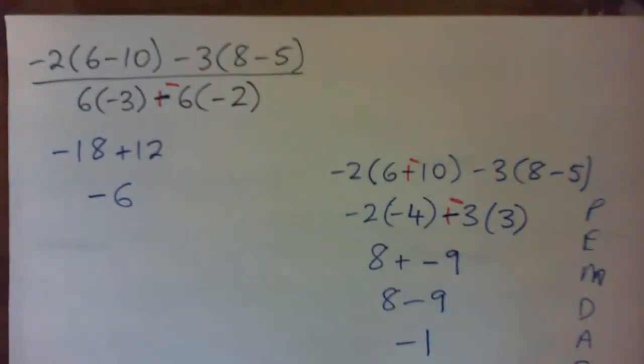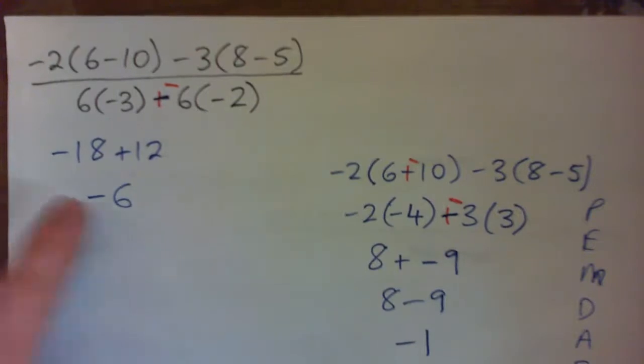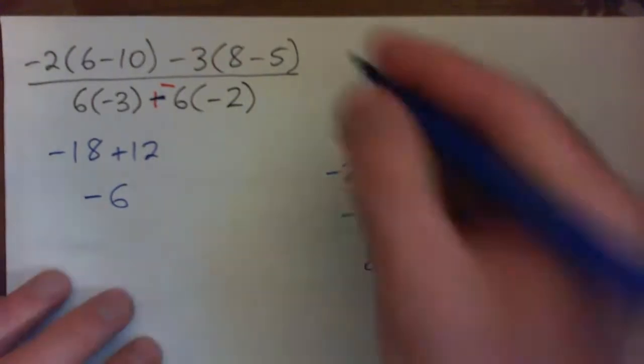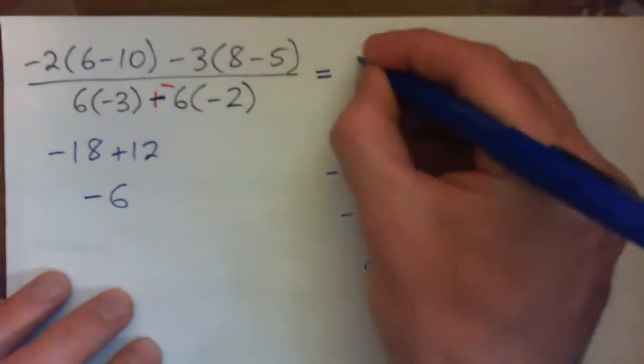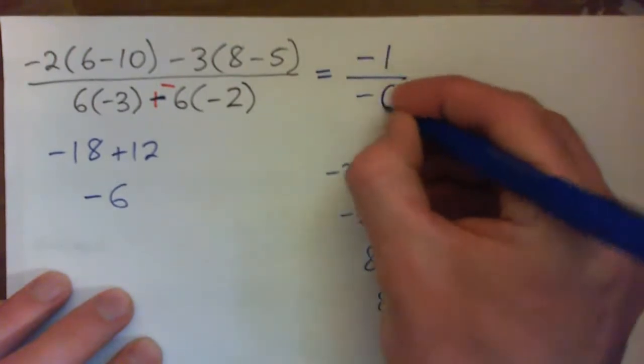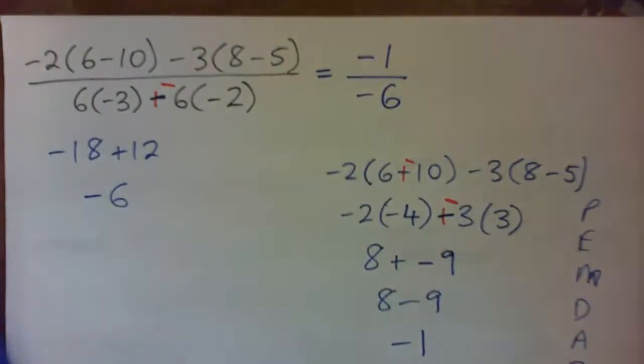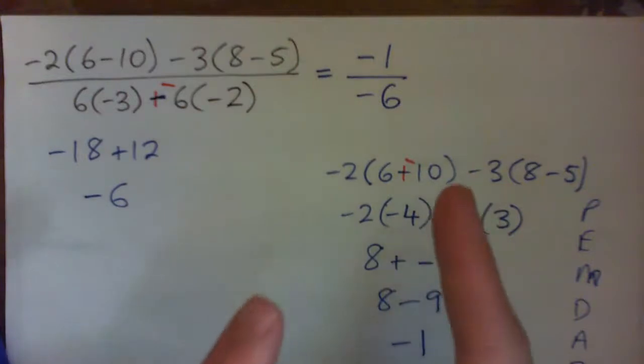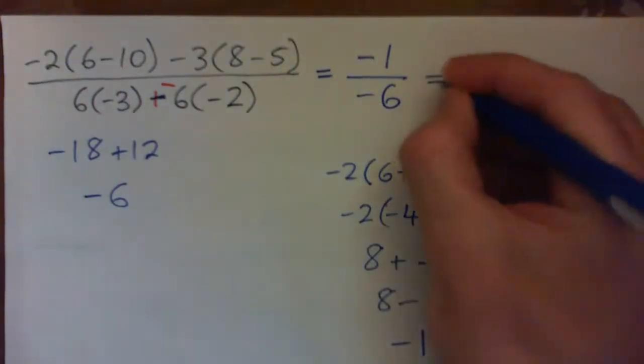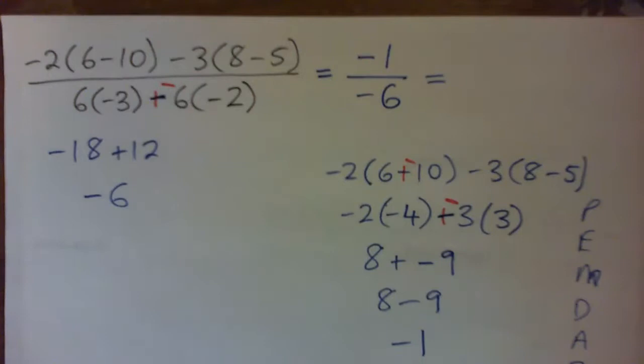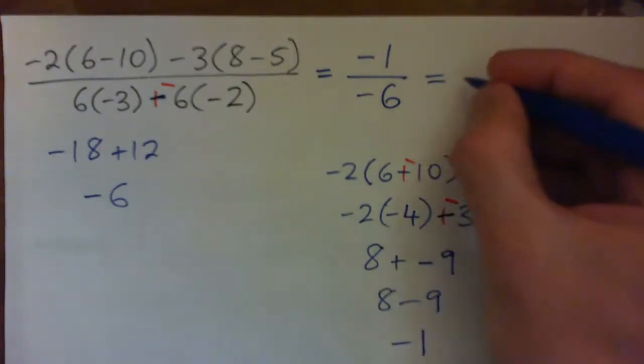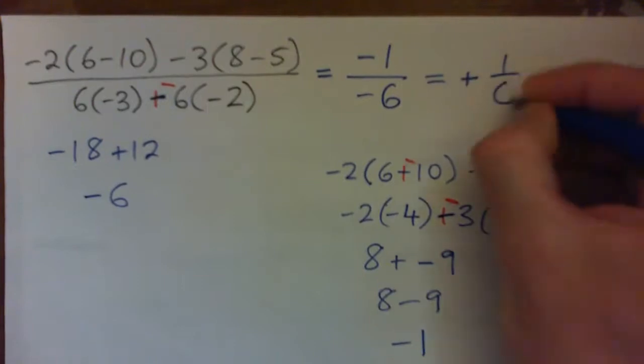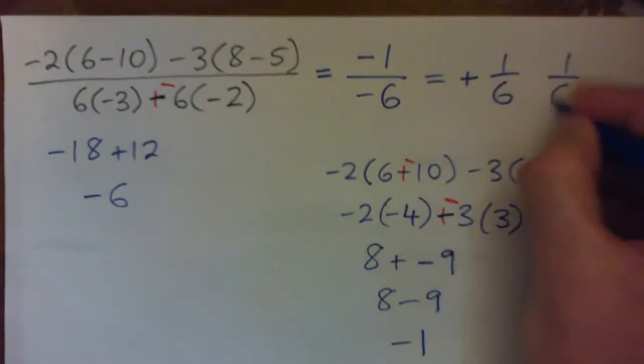A debt of $18 added to $12 cash is a debt of $6, right? So the top became negative 1. The bottom became negative 6. So what I have is negative 1 over negative 6. Now, this is a point where a lot of students struggle. This is a negative over a negative, right? What do you think that makes? Negative over negative. Negative divided by a negative makes a positive.